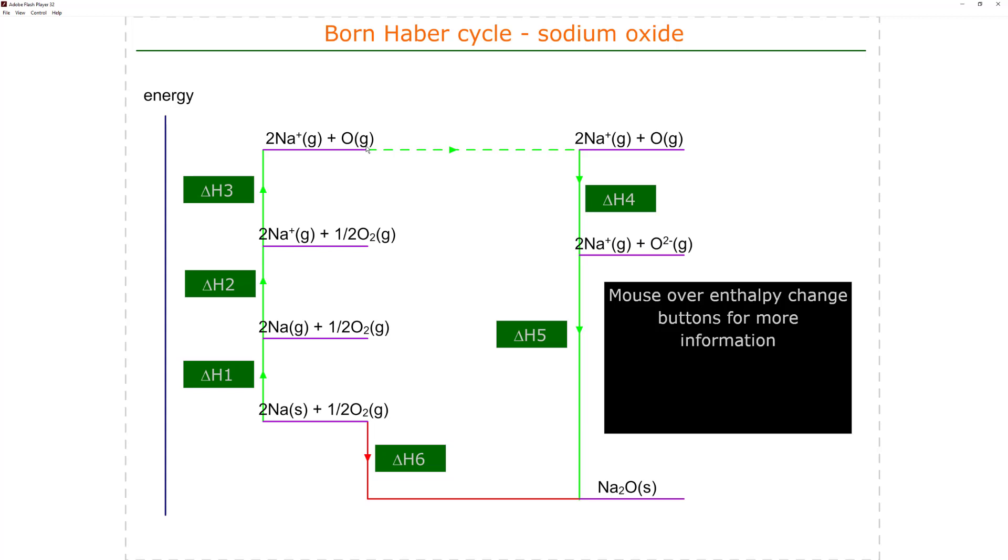The next step is to turn the oxygen into oxide ions. This requires the addition of two electrons - two electron affinities, the first and second electron affinity. So delta H4 is the sum of the first and second electron affinities of oxygen. This creates the sodium and oxide ions.